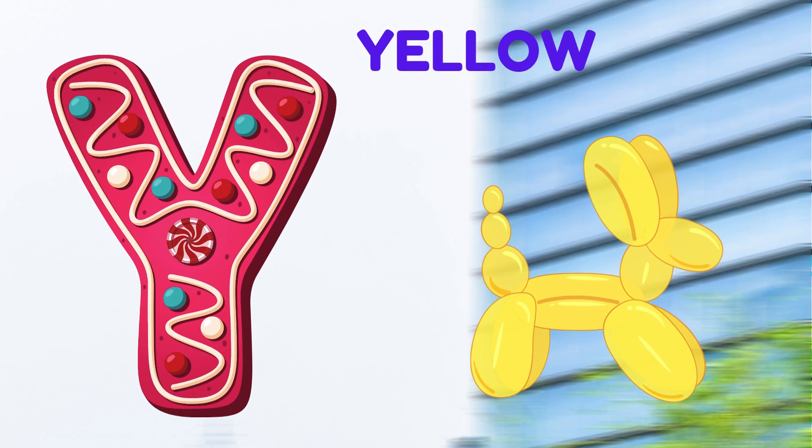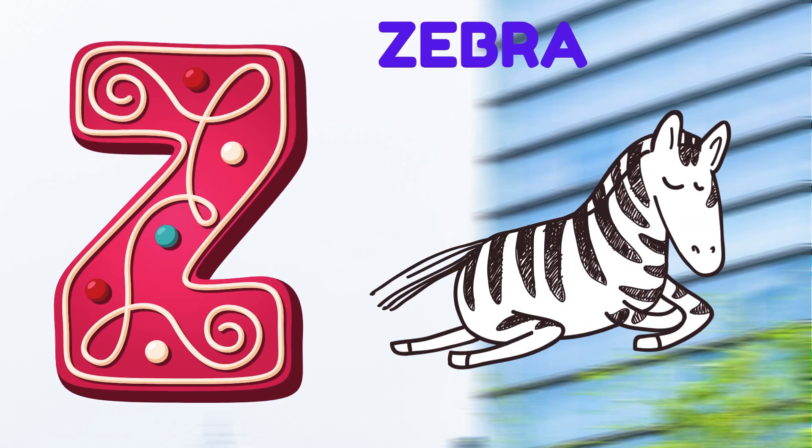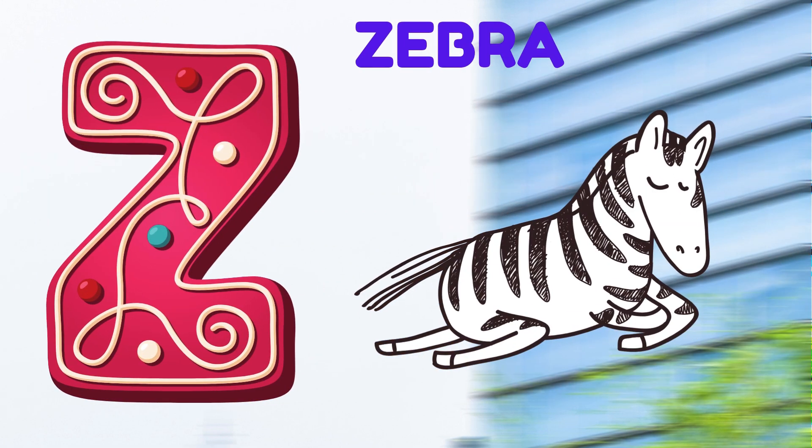Y is for yellow, y-y-yellow. Z is for zebra, z-z-zebra.